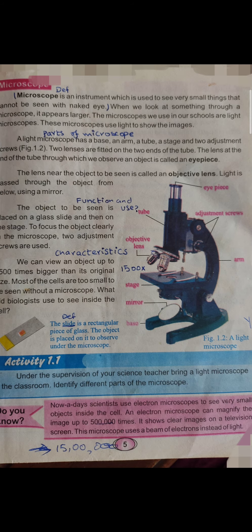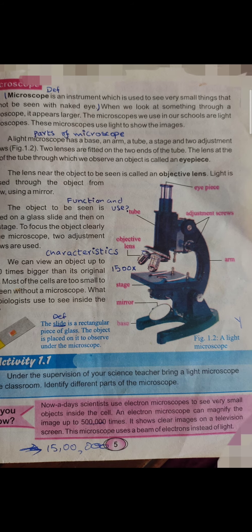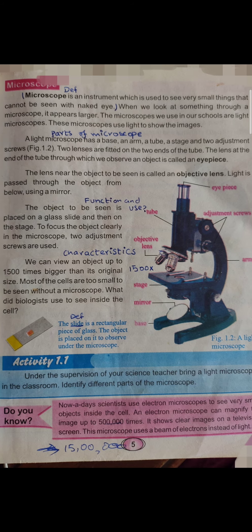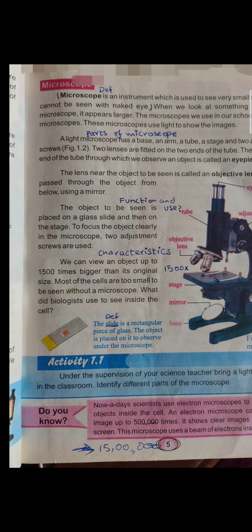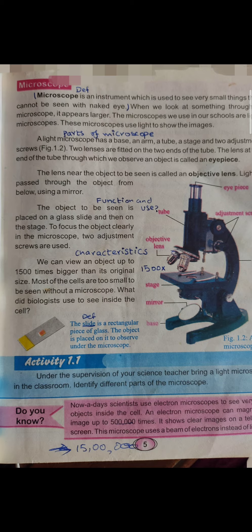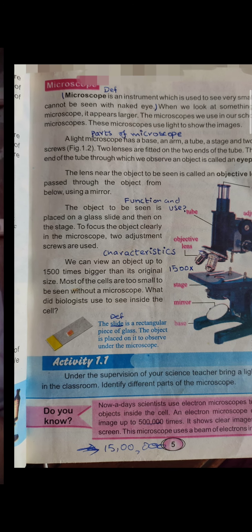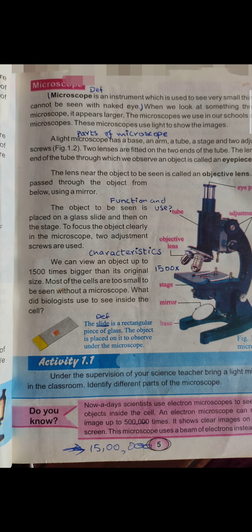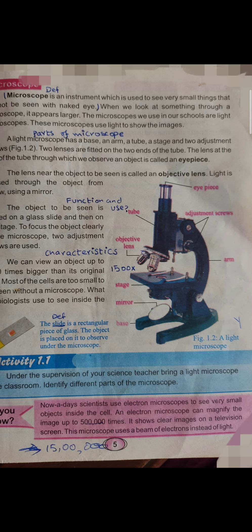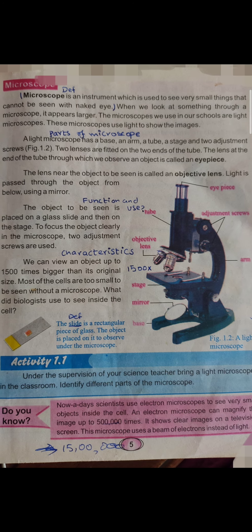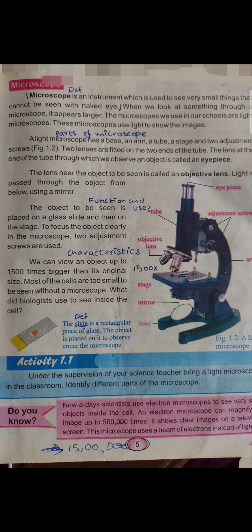As we use this light, we will magnify the objects and see them. A light microscope has a base, an arm, a tube, and two adjustment screws. Two lenses are fitted on the two ends of the tube. The lens at the end of the tube through which we observe an object is called an eyepiece.